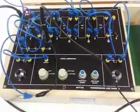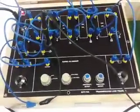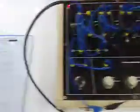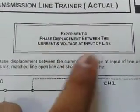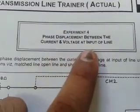Now open experiment number 4 given in the manual. Phase displacement between the current and voltage at input of line.